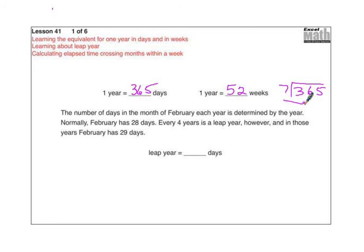The number of days in the month of February each year is determined by the year. Normally, February has 28 days. Every four years is a leap year, however, and in those years, February has 29 days. So in a leap year, if we have an extra day in February, an extra day in the year, we are going to have 366 days.